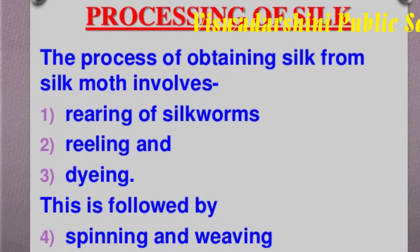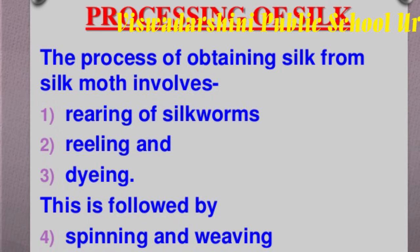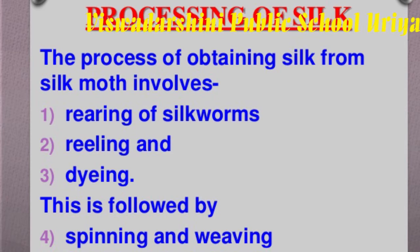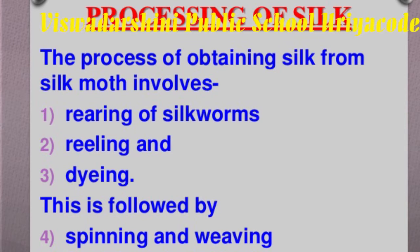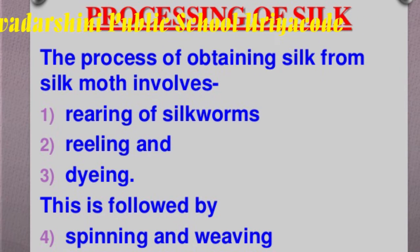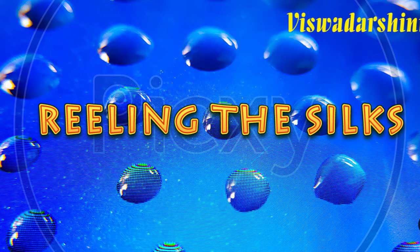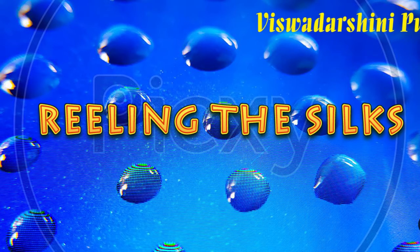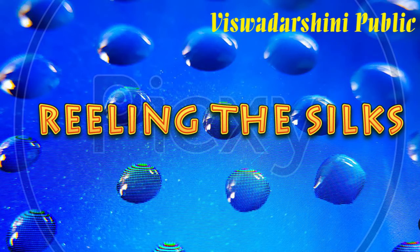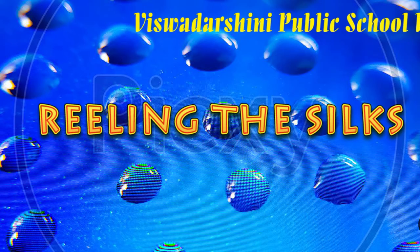Second, processing silk: a pile of cocoons is used for obtaining silk fibers. The cocoons are kept under the sun, or boiled, or exposed to steam so that the silk fibers separate out. The process of taking out threads from the cocoon for use as silk is called reeling the silk. Reeling is done in special machines which unwind the threads or fibers of silk from the cocoon.